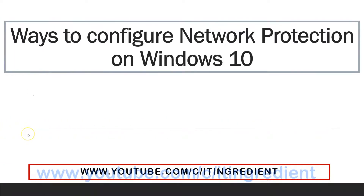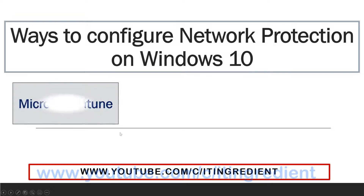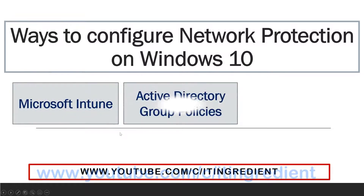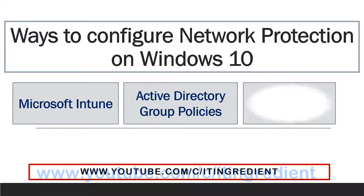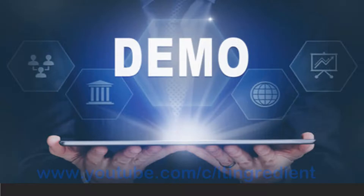Let's discuss the different ways how we can configure network protection on a Windows 10 device. You can configure network protection using Microsoft Intune, Active Directory group policies, or PowerShell commands. So let's get into the demo now.